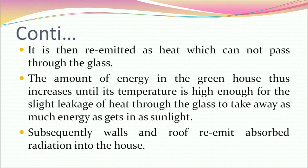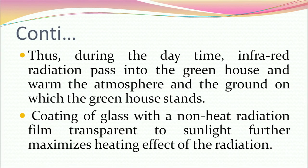The absorbed sunlight is re-emitted as heat, which cannot pass through the glass. Energy inside the greenhouse increases until the temperature is high enough for slight heat leakage through the glass to balance the incoming sunlight. The walls and roof re-emit absorbed radiation into the house. During daytime, infrared radiation warms the atmosphere and ground. Coating the glass with a non-heat-radiation film further maximizes the heating effect.